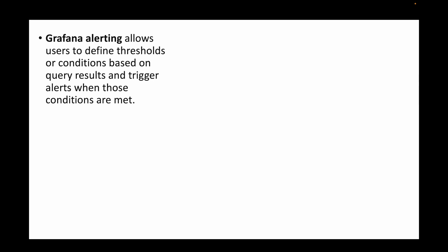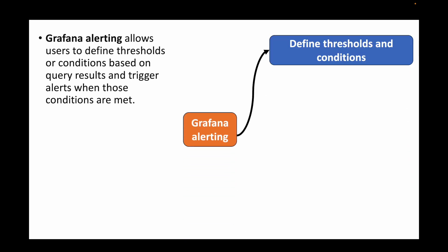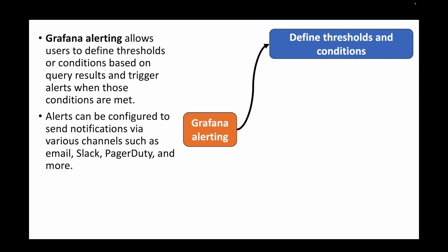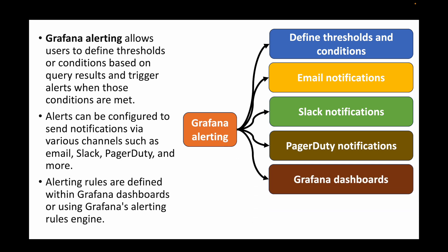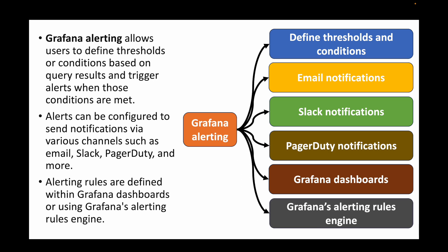The next question is: what is Grafana alerting and how does it work? Like any monitoring tool, Grafana has alerting mechanisms that trigger notifications based on defined thresholds and conditions. These alerts can send email notifications, Slack notifications, PagerDuty notifications, and more. For example, if CPU utilization goes above 90%, you can configure Grafana to trigger a notification. Alerting rules can be defined within Grafana dashboards or using Grafana's alerting rules engine.